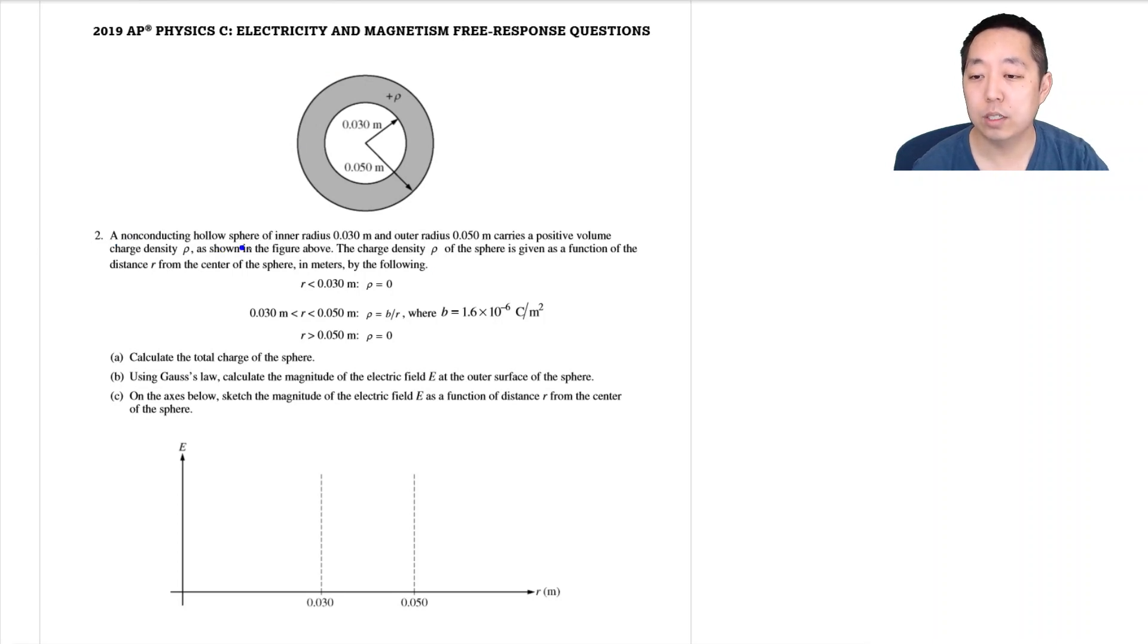So a nonconducting hollow sphere of inner radius 0.3 meters and outer radius 0.5 meters carries a positive charge density rho as shown in the figure above. The charge density rho of a sphere is given as a function of distance r from the center of the sphere, in meters given by the following. So no charge here, no charge out here, only a charge density inversely proportional to r there.